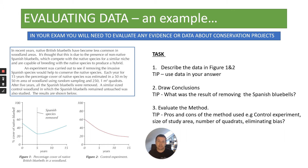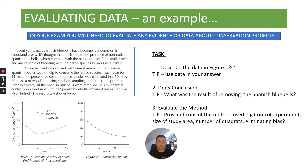Number one says describe the data in figures one and two. This is a four-mark question, so you're going to have to use the data in your answer — they expect you to analyze both graphs and mention data. The second thing is to draw conclusions: what was the result of removing the Spanish bluebells, because that was the purpose of this experiment. And thirdly, evaluate the method — they've given you lots of information on the method.